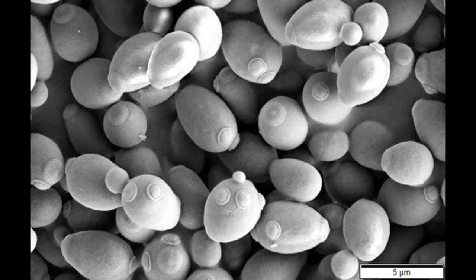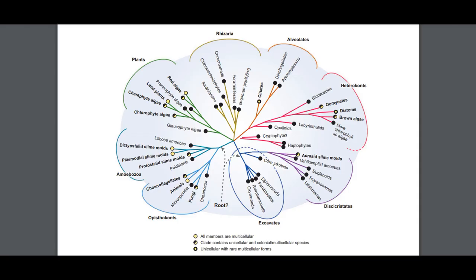Various other clades have independently achieved multicellularity, including red algae, brown algae, oomycetes, plants, fungi, animals, etc. In all cases, multicellular forms are closely related to unicellular organisms who share many of the same genes, such as animals and choanoflagellates, or fungi and chytrids. Even among multicellular organisms, there are those with true tissues, like Eumetazoa, and those without, like poriferans. If God created all life, then he sure does like making multicellular organisms for some reason.